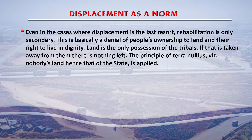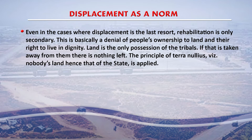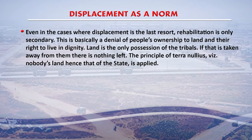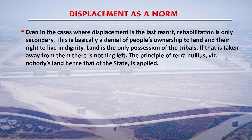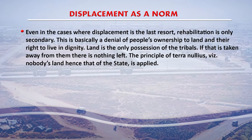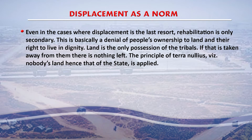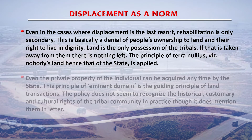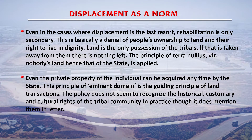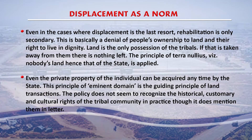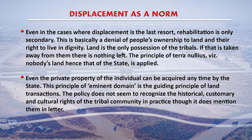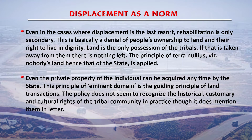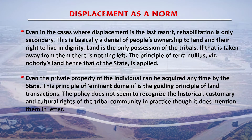Even in cases where displacement is a last resort, rehabilitation is only secondary. This is basically a denial of people's ownership to land and their right to live in dignity. Land is the only possession of the tribals — if that is taken away from them, there is nothing left. The principle of terra nullius, or nobody's land hence that of the state, is applied here. Even the private property of an individual can be acquired anytime by the state under the principle of eminent domain. The policy does not seem to recognize the historical, customary and cultural rights of the tribal community in practice, though it does mention them in letter.